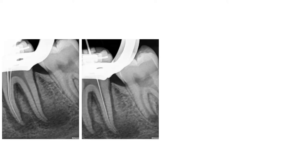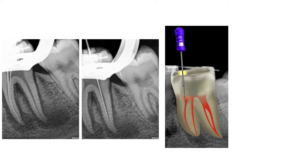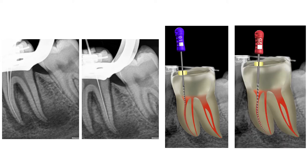The previous restoration was removed and an access cavity prepared. Four root canal orifices were detected and the canals negotiated to patency using a size 10 K-file. It was noted that the size 10 K-file felt very loose in the canals, and it was possible to take even a size 15 and 20 K-file to full working length without any problem. A size 25 K-file was the first file that felt a bit tight at full working length but still loose in the coronal aspects.